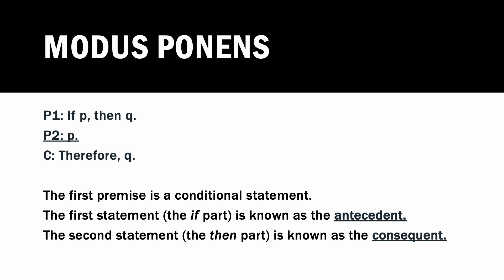Next, we have four deductive argument patterns that all contain if-then statements. The first is: if P then Q; P; therefore Q. The first premise is a conditional statement. A conditional statement contains two parts: the if part is known as the antecedent, and the then part is known as the consequent. This pattern is known as affirming the antecedent, because the second premise affirms the antecedent of the conditional statement. The fancy term for this is modus ponens. Modus ponens is a valid deductive argument form — if the premises are true, the conclusion has to be true. Any argument that follows this pattern is valid.